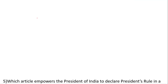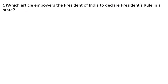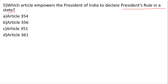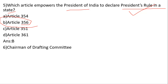Which article empowers the President of India to declare President's Rule in a state? The correct answer is B — Article 356. Under Article 356, the President of India can declare President's Rule in a state when the state's governing body is unable to solve administrative problems.